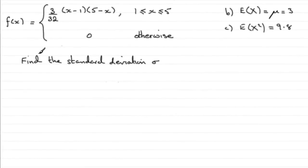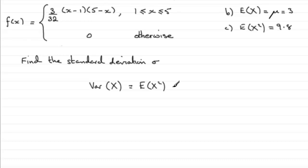For this part we've got to find the standard deviation sigma of X. To do this we should be familiar with the formula that the variance of a random variable X is equal to E(X²) minus E(X) all squared. In the previous parts we were given E(X²), worked out in part c as being 9.8, and E(X) is the mean, which we worked out in part b as mu equals 3.